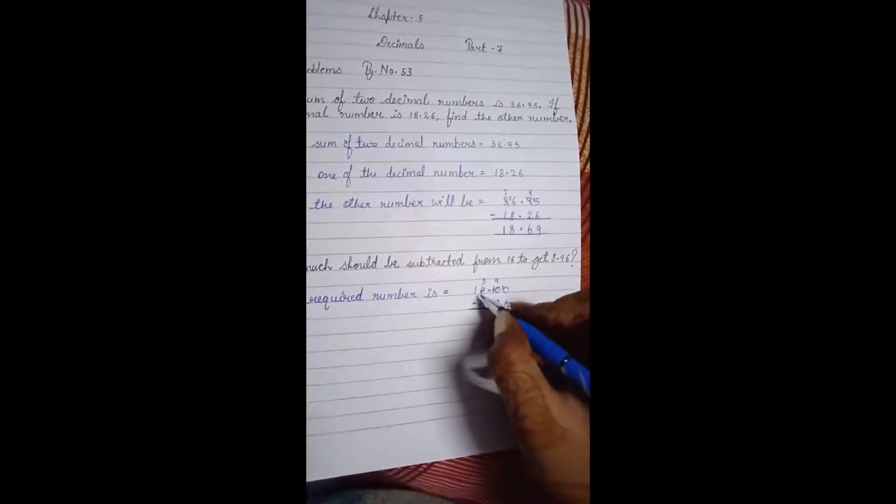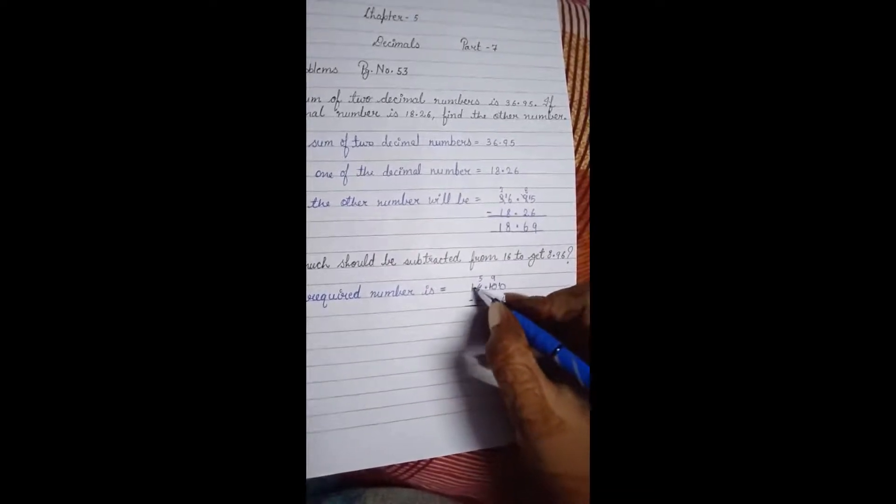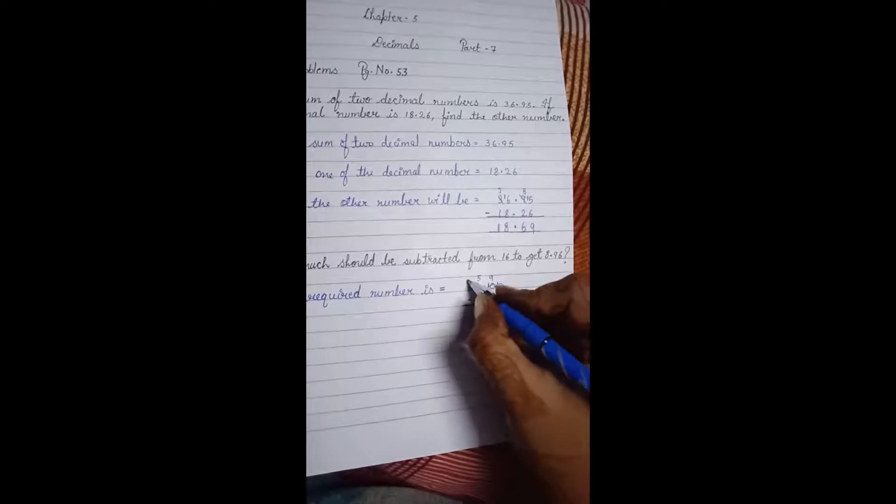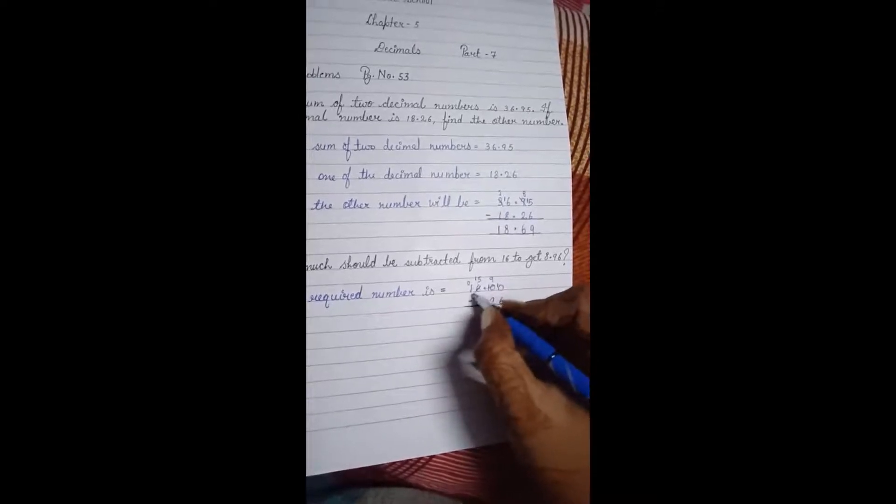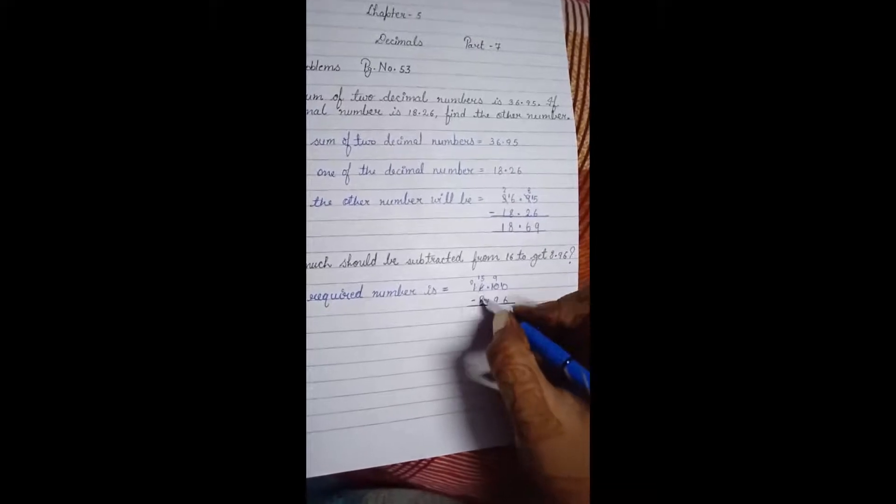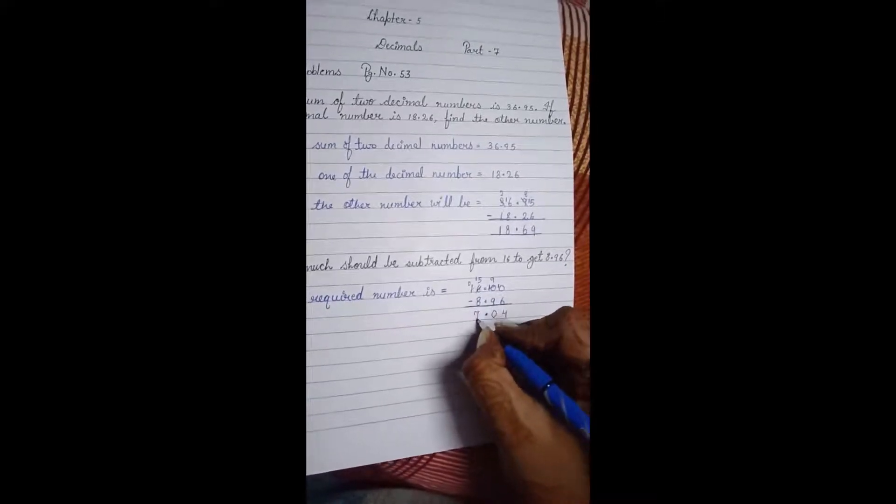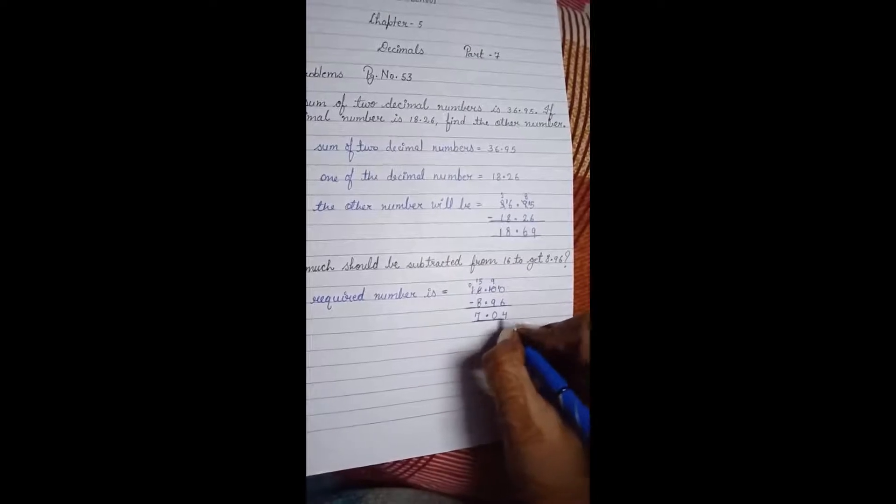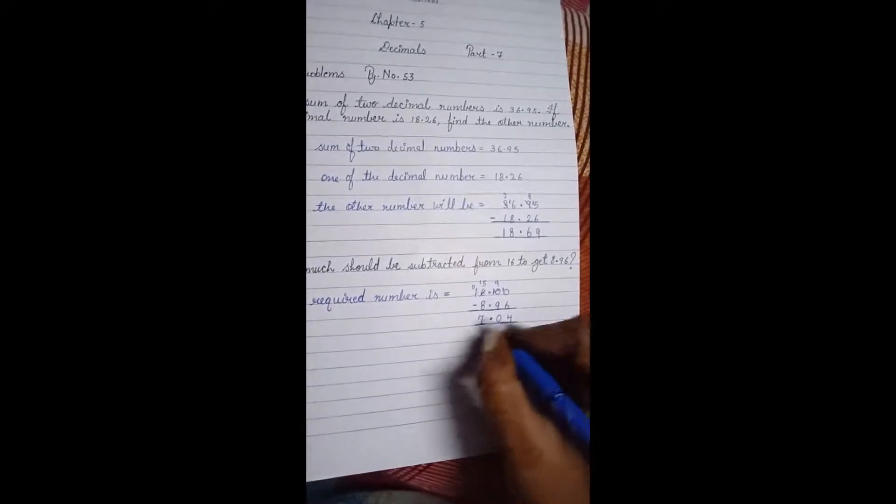8 cannot be subtracted from 5, so it will be considered as 15. We will take borrow. Then it will become 15. We need not to write it like this, but here I am just explaining you. 15 minus 8 is 7. So our answer is 7.04. The required number is 7.04.